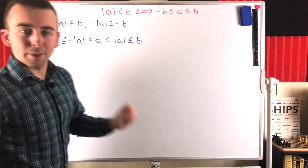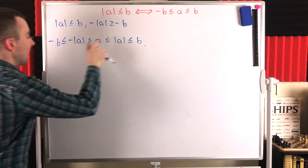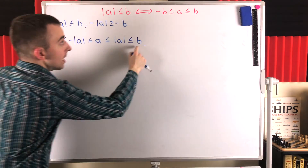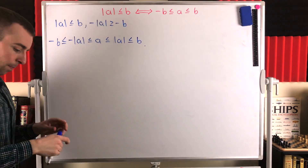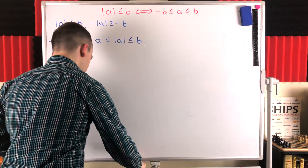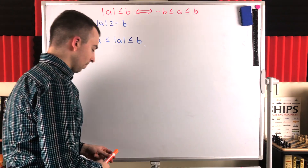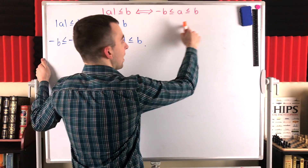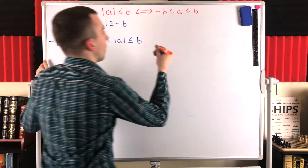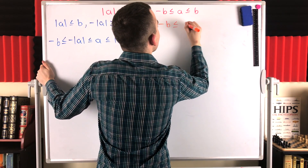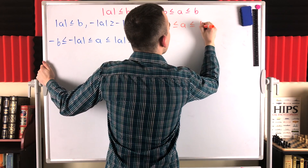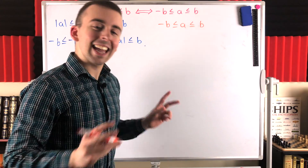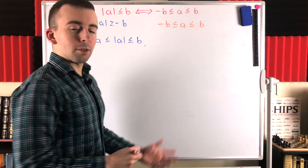That completes the first direction of the proof: negative B is less than or equal to A, which is less than or equal to positive B. Beautiful. Now let's go with orange for the second direction of the proof. Now we're going to assume that negative B is less than or equal to A is less than or equal to positive B, and get our way back over here. This will be a quick proof by cases, as is often the case with absolute value proofs. It's useful to break it into a non-negative case and a negative case.